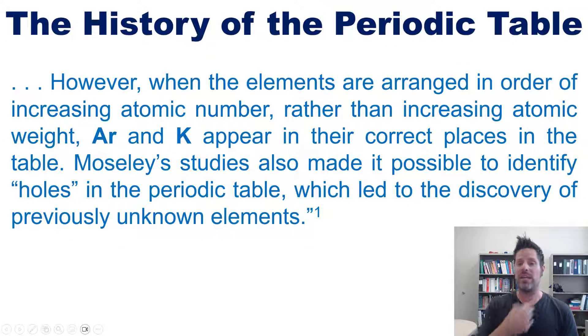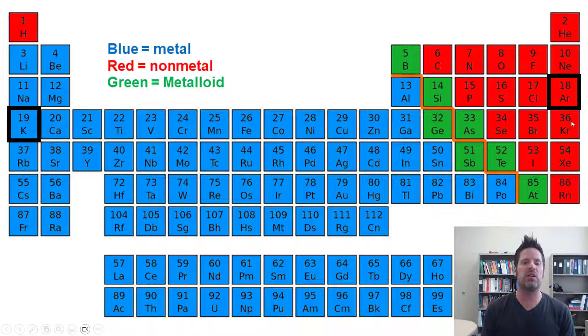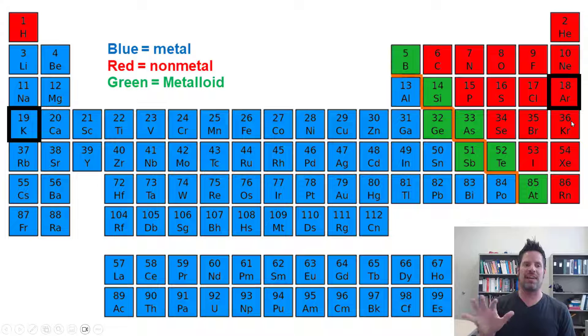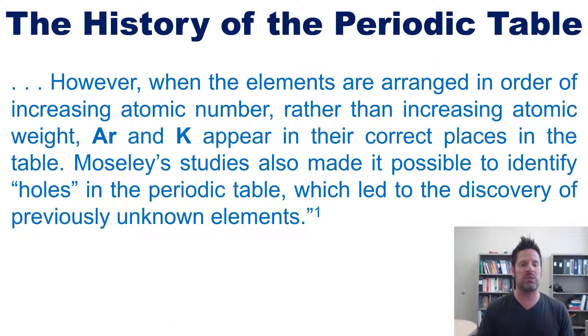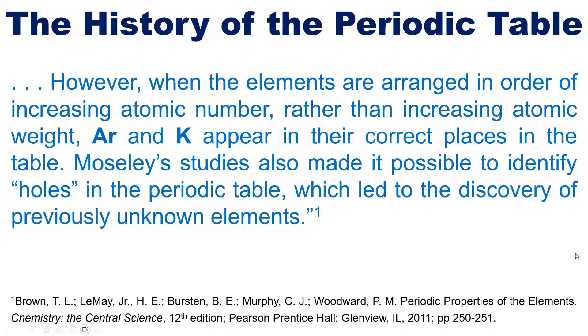However, when the elements are arranged in order of increasing atomic number rather than increasing atomic weight, argon and potassium appear in their correct places. Moseley's studies also made it possible to identify holes in the periodic table, which led to the discovery of previously unknown elements.